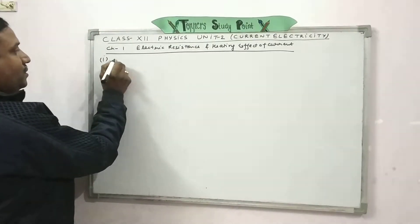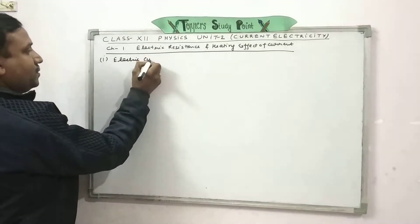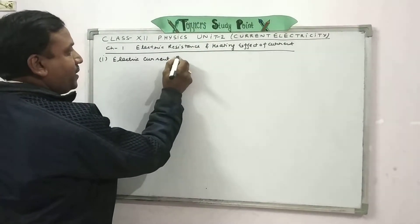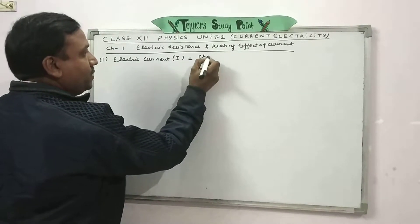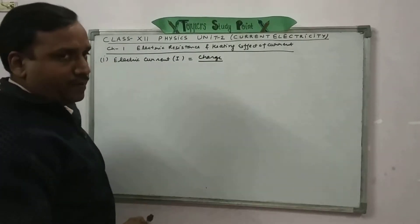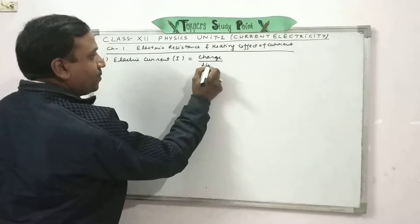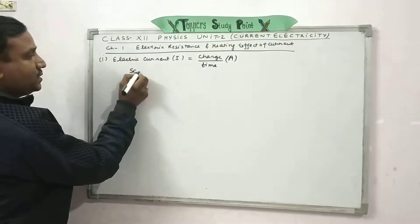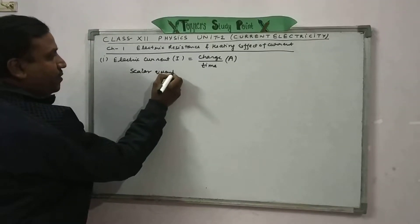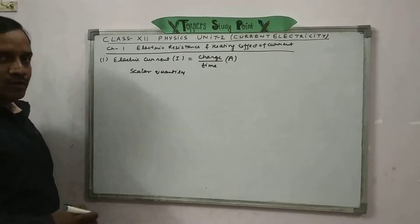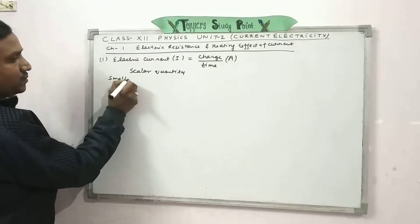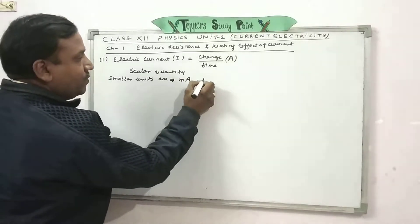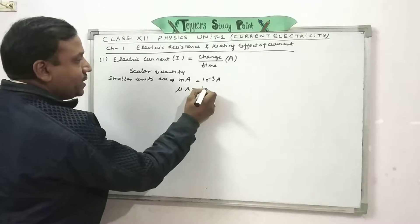Formula 1: Electric current. This formula is known to everyone. Electric current, represented by I, is equal to charge per unit time — the rate of flow of charge is known as electric current. Its unit is ampere, represented as capital A. It is a scalar quantity, so no direction is mentioned with its magnitude. Its smaller units are milliampere (mA = 10⁻³ A) and microampere (μA = 10⁻⁶ A).